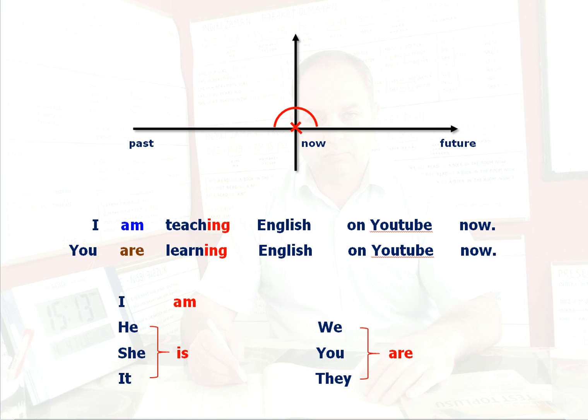We use the present continuous tense to express the idea that something is happening now, at the time of speaking. It can also be used to show that something is not happening now.